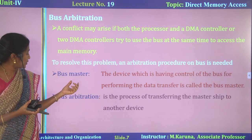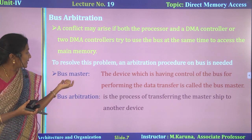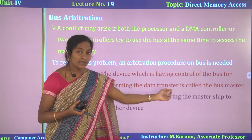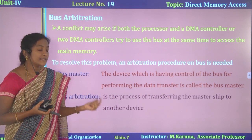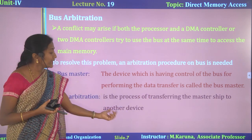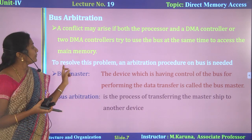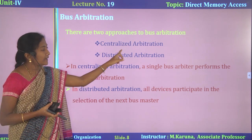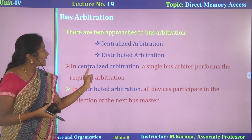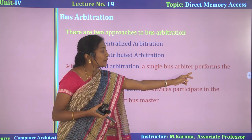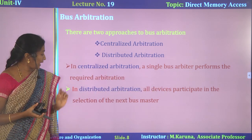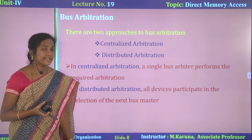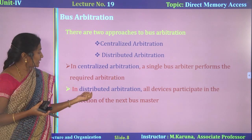Before that, you should know the meanings of bus master and bus arbitration. The device which has complete control over the bus to perform the data transfer operation is called the bus master. Bus arbitration is the process of transferring the mastership to another device. To solve this conflict, a bus arbitration process is required. There are two approaches to bus arbitration: centralized arbitration and distributed arbitration. In centralized arbitration, a single bus arbiter performs the required arbitration. In distributed arbitration, all devices participate in the selection of the next bus master.